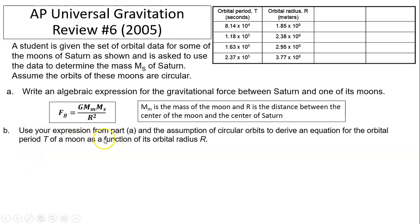Question b: Use the expression from part a and the assumption of circular orbits to derive an equation for the orbital period t of the moon as a function of its orbital radius r. So you need to find t. Think about what equations you can use. One of the information that you have given is these circular orbits. What does circular orbits mean?